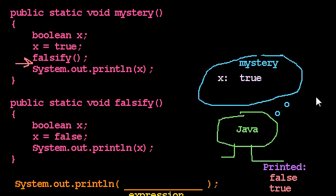That works through maybe one of the more complicated scenarios we could possibly have with variables at this point, given what we know. This concludes our understanding of storing true or false values in variables. What I'd like to head toward next is looking at what it takes to store other kinds of values in a variable — in particular, how to store numbers. I'll see you in the next video.